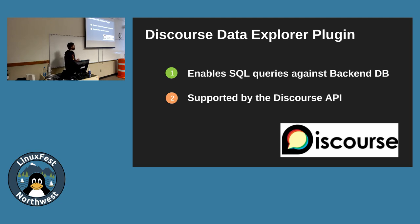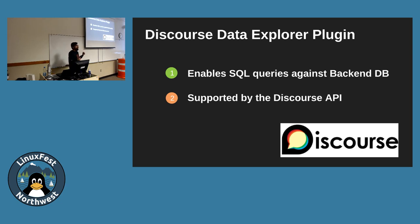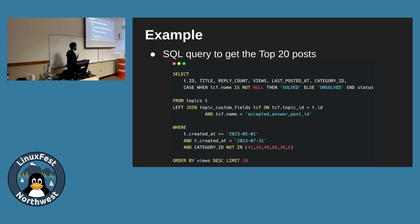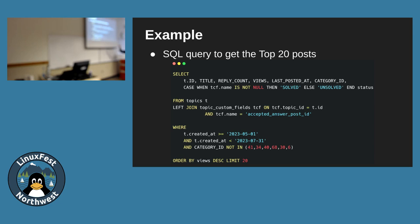Discourse is friendly — they provide something called the Data Explorer Plugin. It helps us get the specific data we need. For example, I can query how many posts are most viewed and have not been answered, which the built-in tool doesn't support. It is SQL query-based and powered by the Discourse API. It's simple: we do three basic steps — SELECT, FROM, and WHERE. You can define it as complex or as simple as you want. And with that, we can get the data we want about the community.